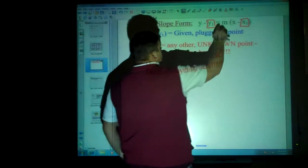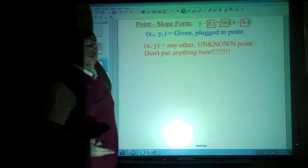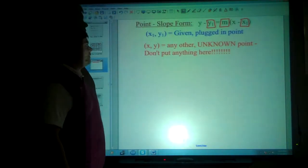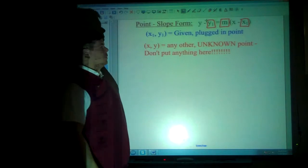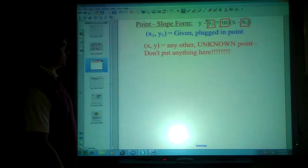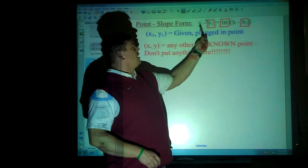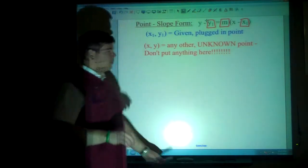And we're also going to substitute a value in for the slope. That's a point that we're either going to be given or we will have to find. But we can usually find that from the graph or from a couple coordinates that are given to us. We're not actually going to put anything in for this y or that x. Just remember that.